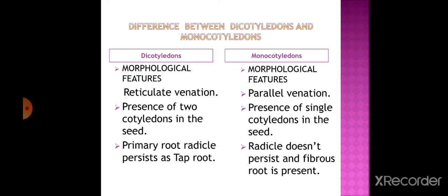Let us discuss the differences between dicotyledons and monocotyledons. Morphological features: in the leaf, dicotyledons show reticulate (network-like) venation, whereas monocotyledons show parallel venation. Venation means the arrangement of veins on the leaves. Dicotyledons have two cotyledons in the seed whereas monocotyledons have a single cotyledon. In the root system, the primary root (radicle) persists as a tap root in dicotyledons, whereas in monocotyledons the radicle does not persist and a fibrous root system is present.